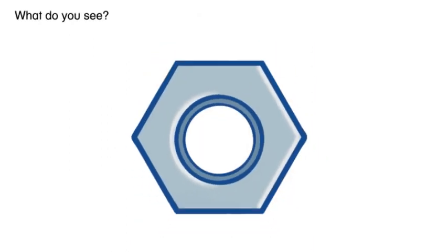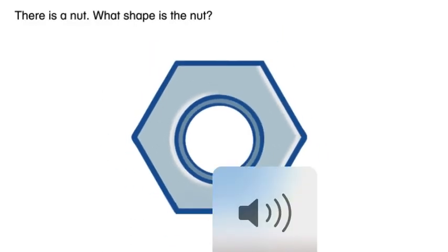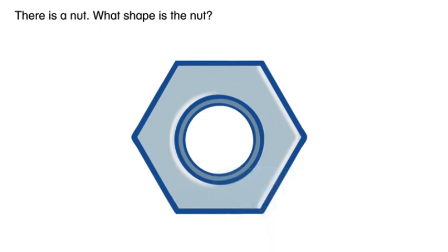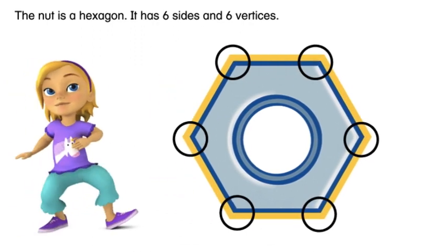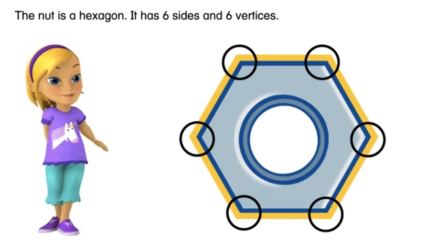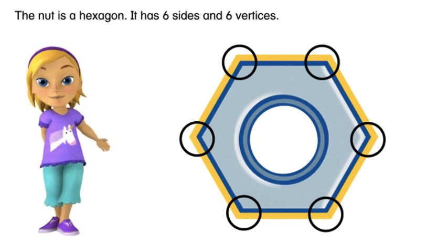What do you see? There is a nut. What shape is the nut? The nut is a hexagon. It has six sides and six vertices. Now you know how to identify hexagons.